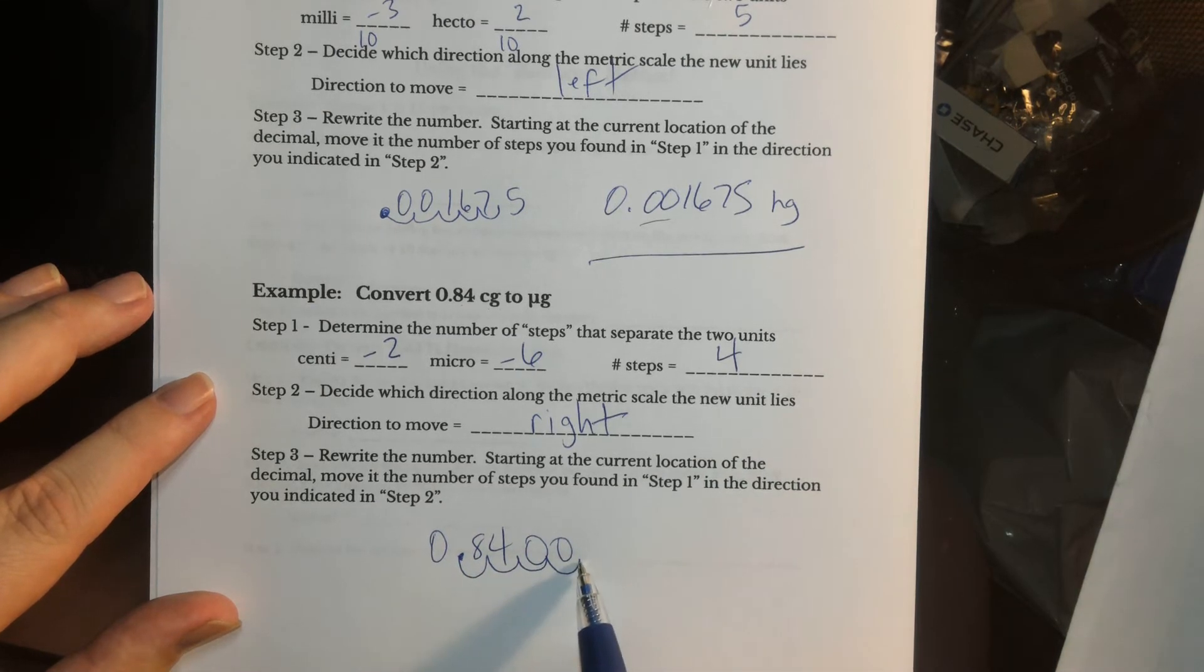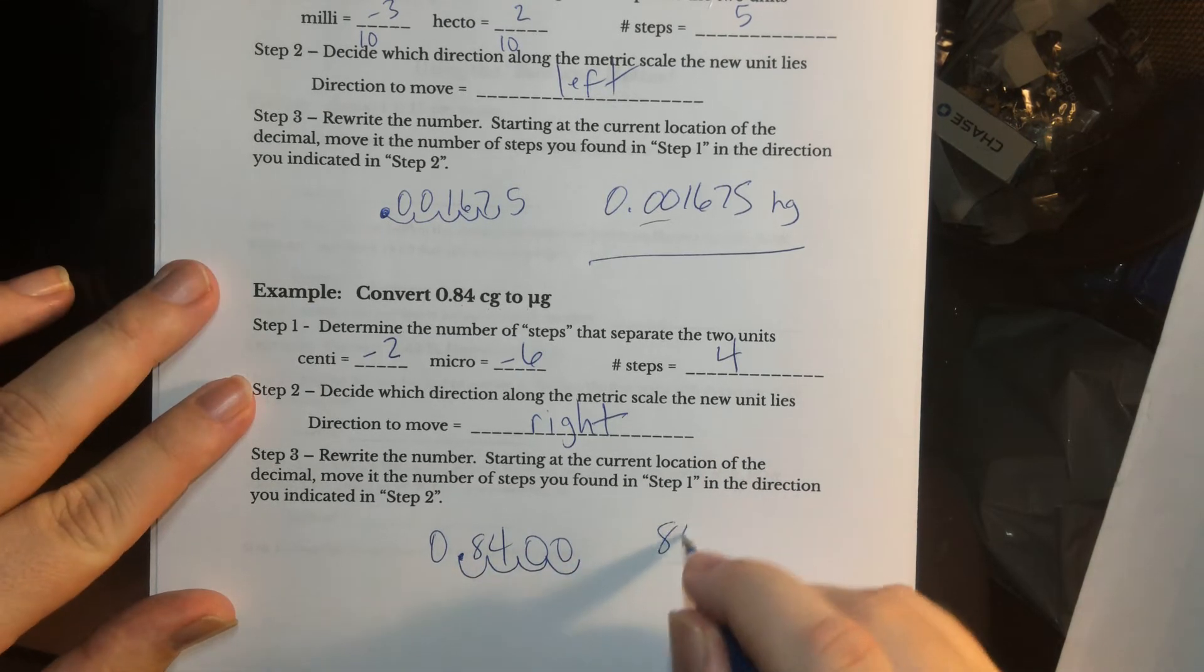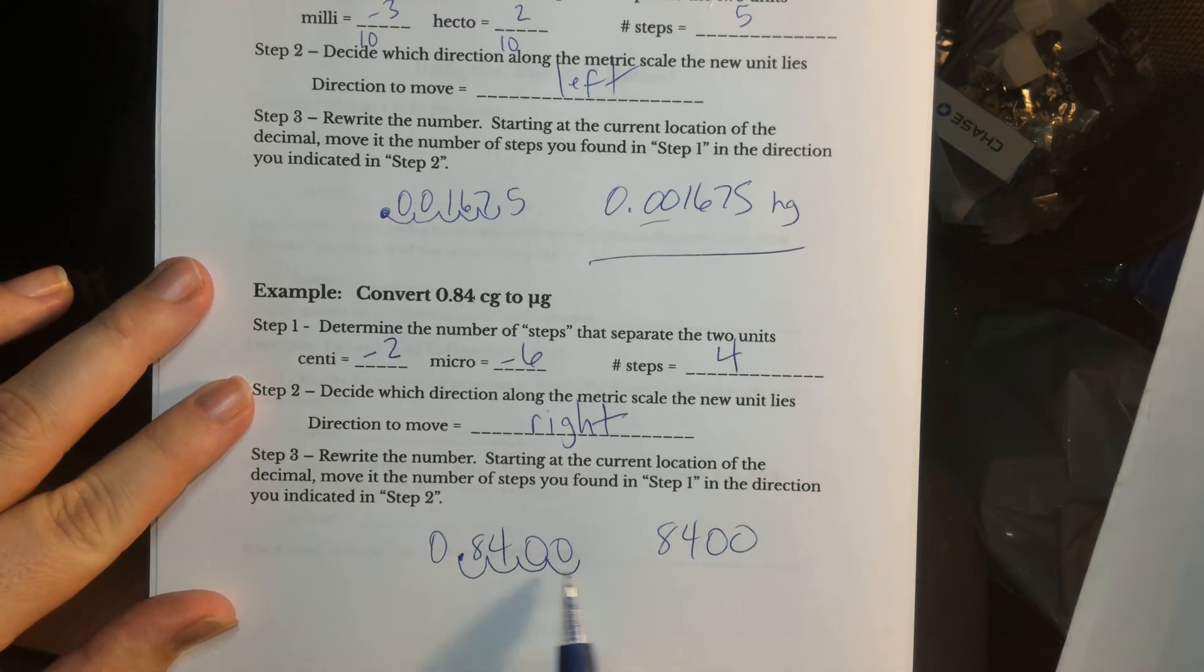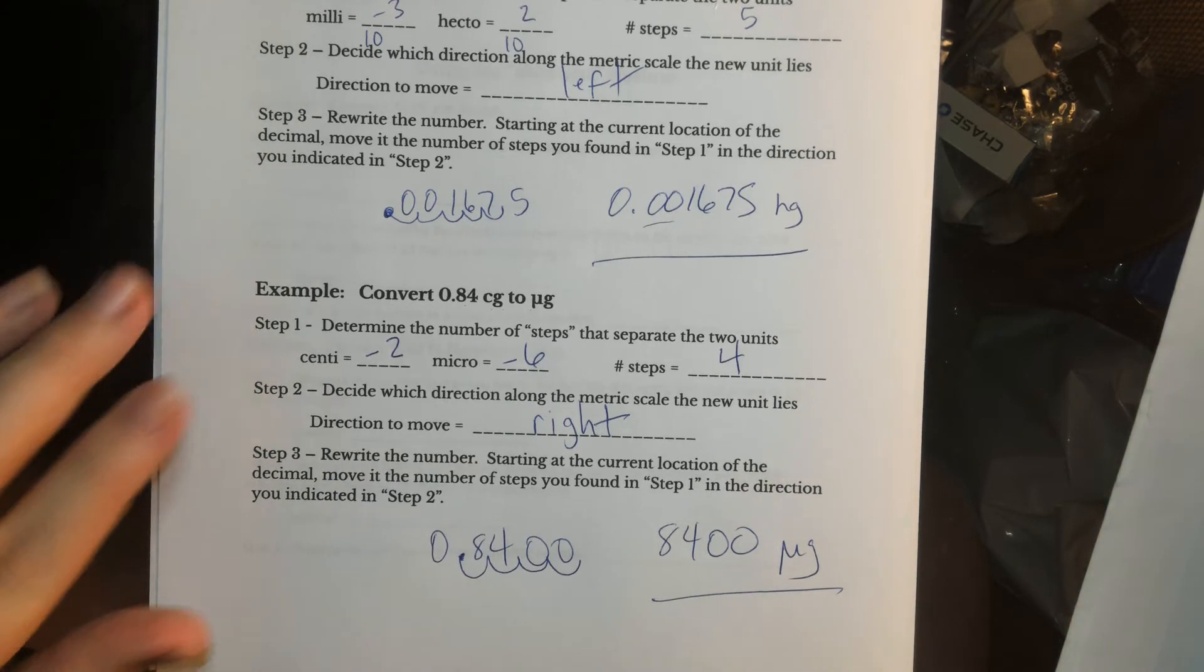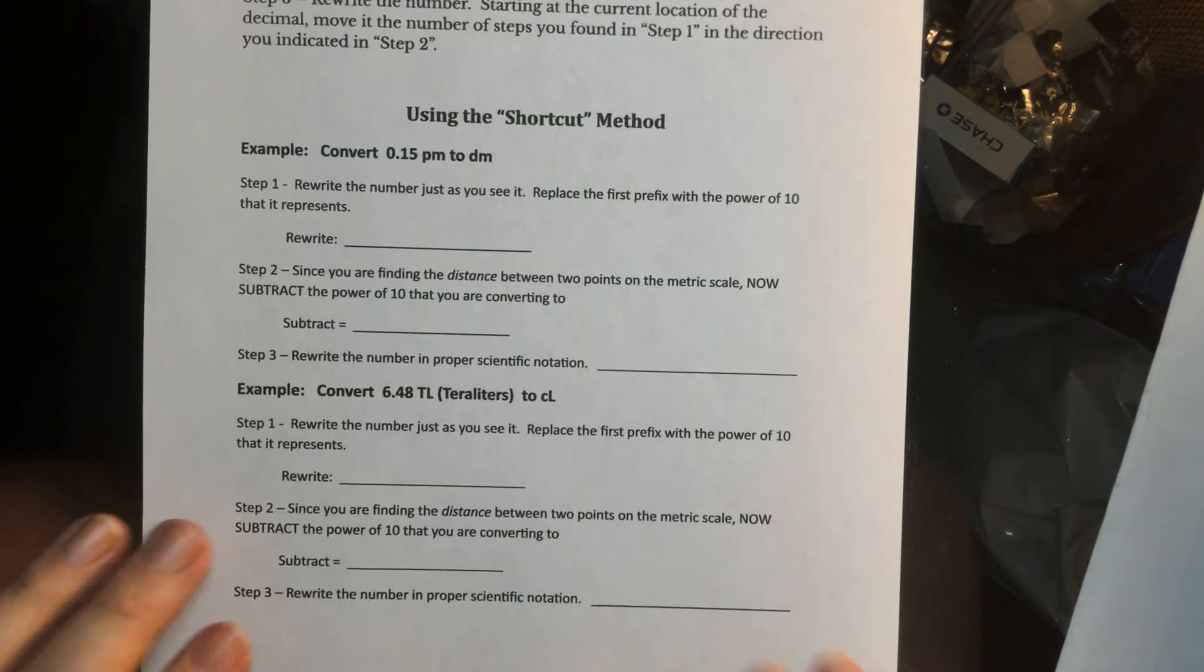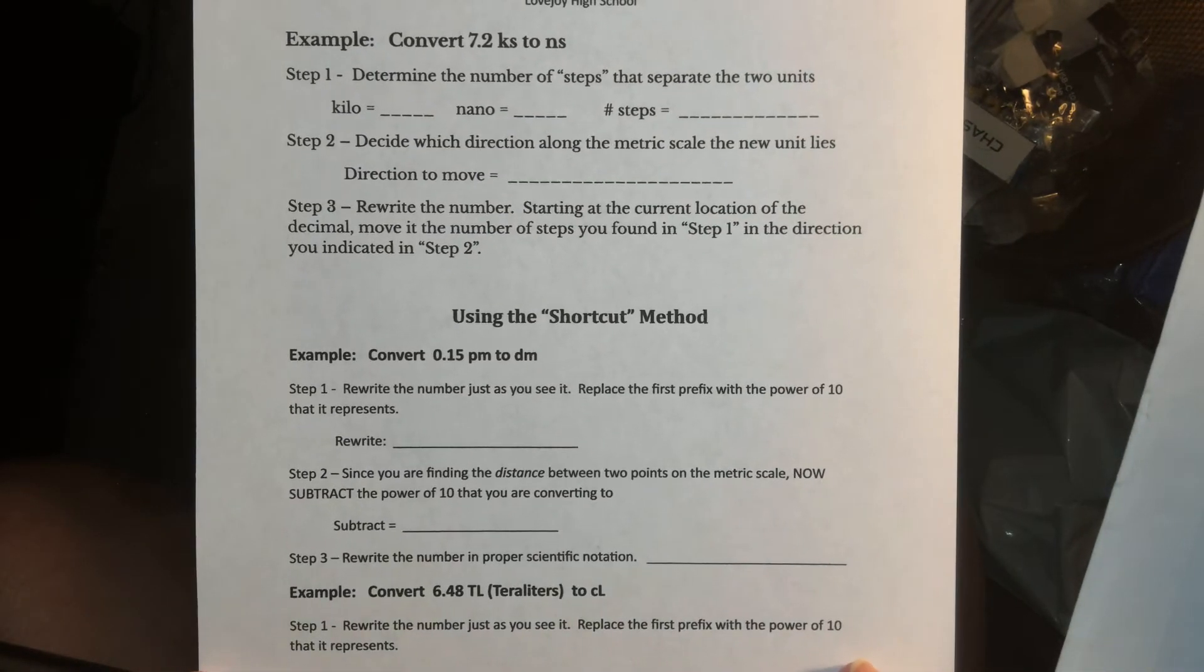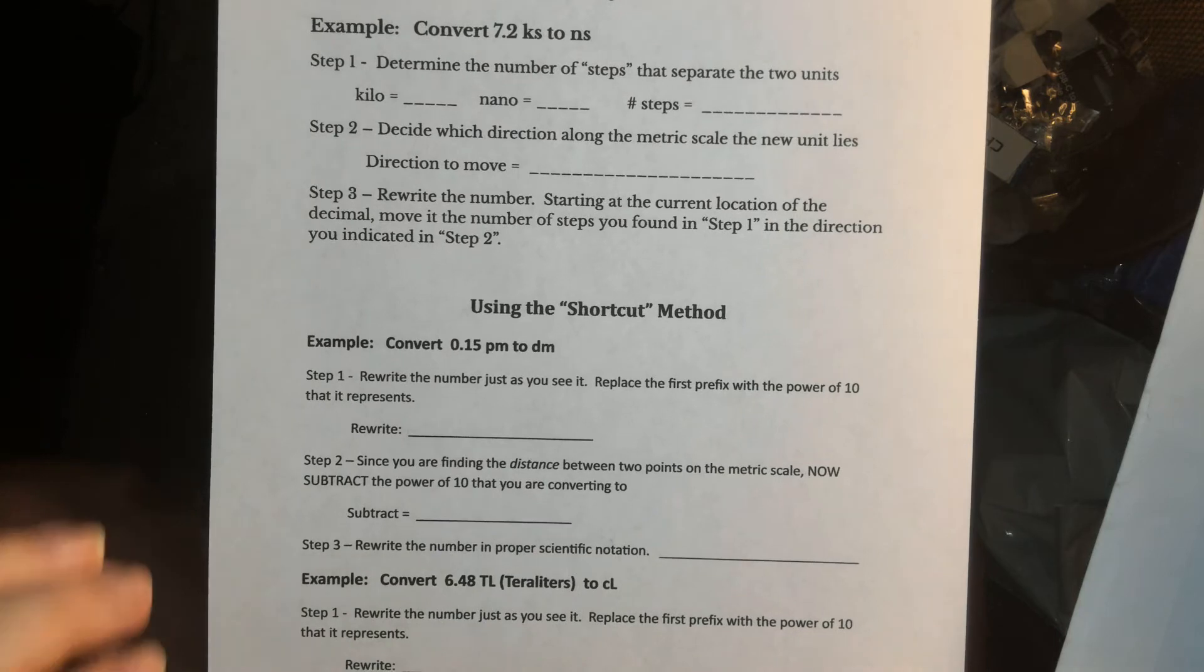Now this time we're not going to write the decimal, because now the number we have is 8,400. These two zeros here are just placeholders, so we don't want to actually show the decimal. And that's in micrograms. Okay, now we have one more example here to do like this. I would really like you to hit pause and try the third example on your own, and then I'll go through it.